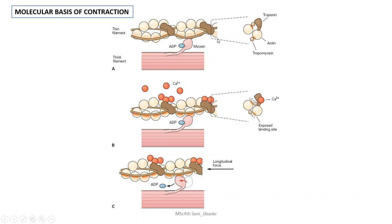Muscle contraction is brought about by the sliding of thin filament over the thick filament. This model of muscle contraction is called the sliding filament mechanism of muscle contraction, and this is the most accepted model to describe muscle contraction.